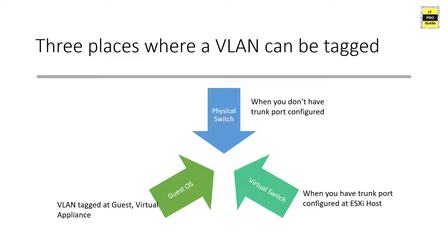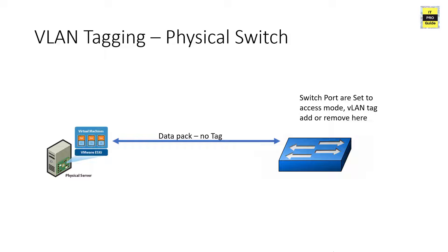There are three places where a data frame can be tagged with a VLAN ID: the physical switch, the virtual switch, or the guest operating system. At the physical switch, if you don't have a trunk configured on the switch ports connected to the vSphere host, then VLAN tagging happens at the physical switch. When you look at the picture, VLAN tagging on a physical switch — the port is set to access mode, so tags are added and removed as frames enter and leave the port. Any frame crossing the switch port does not have a VLAN tag on it.